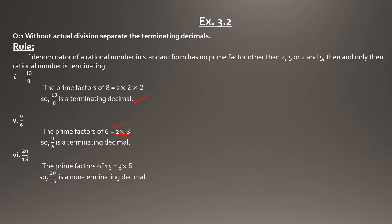Next, 20 over 15. The factors of 15 are 3 × 5. Since 3 is present along with 5, and the rule says only 2 or 5 are allowed, this is non-terminating. If 5 were alone without any other prime factor, it would be terminating. Because 3 is also a factor, we say this is a non-terminating decimal.